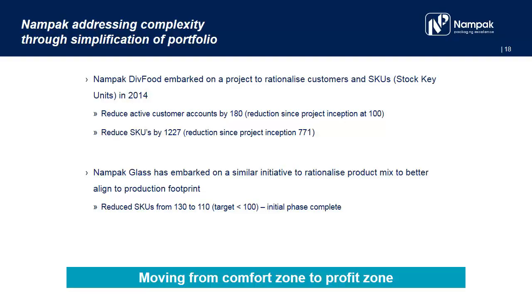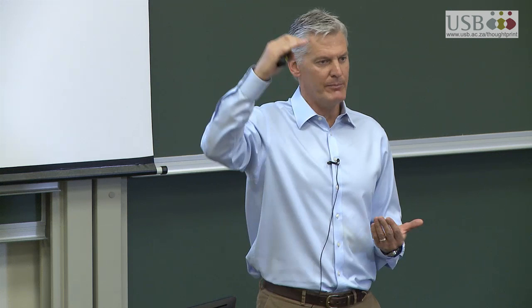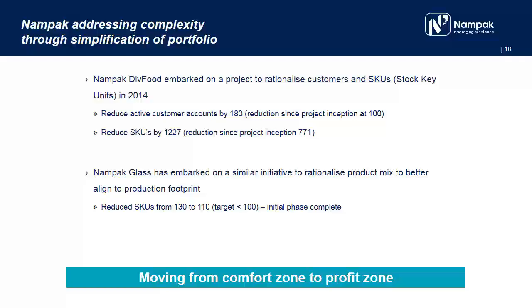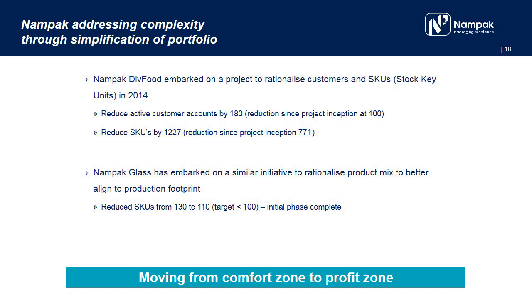We are rationalizing both our customers and our SKUs. The fact is, some customers are too expensive to serve. So you have to bump up the price to a level that reflects the cost of service, and if they are still not prepared to pay that, then they are welcome to go to the competition. We will be reducing our active customer accounts by about 180, and we will reduce our SKUs by 1,227.